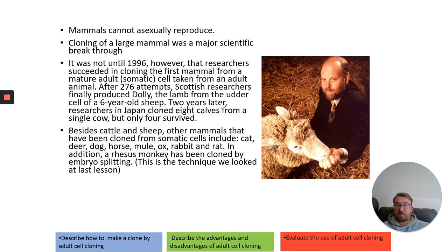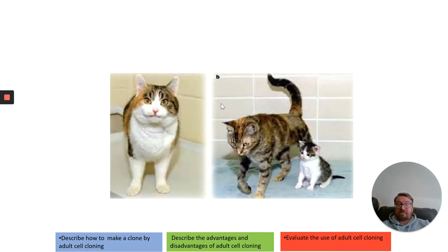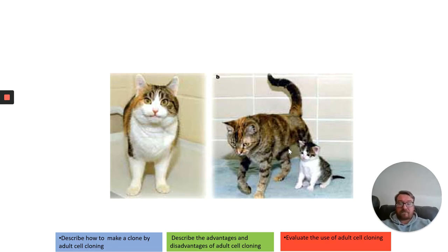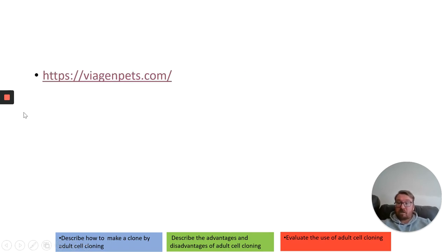Since then, other animals besides cattle and sheep have been cloned — for example, cats, steers, dogs, horses, mules, oxen, rabbits, and rats. A rhesus monkey has also been cloned by embryo transfer cloning. Shown here is CC — the large cat on the left is the mother, and the small cat on the right is known as CC, standing for Carbon Copy. She is genetically identical to the cat on the left; the large one on the right was her surrogate mother.